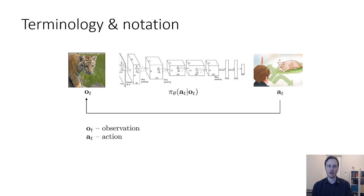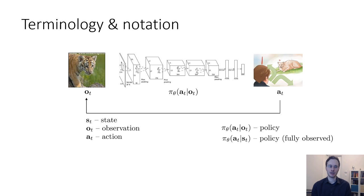To summarize the terminology: O_t represents the observation, A_t represents the action, and pi subscript theta of A_t given O_t is the policy. Another term we'll see a lot in reinforcement learning is the state, denoted S_t. Sometimes we'll see the policy written as A_t given S_t. The difference between S_t and O_t is that the state is typically assumed to be a Markovian state, whereas O_t is an observation that results from that state. Most generally a policy is conditional on observation, but writing it as conditional on state is a more restrictive special case.